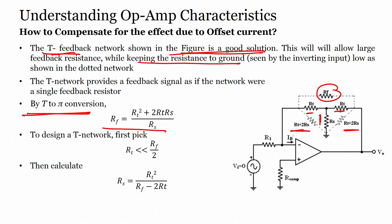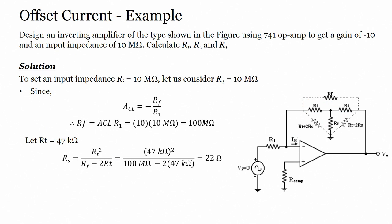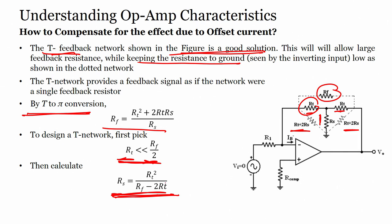To design the T network, first pick RT much less than RF/2. Then calculate RS as RT² / (RF - 2·RT). From these equations we can design a compensation circuit that removes the effect of offset current by choosing appropriate values of RT and RS.